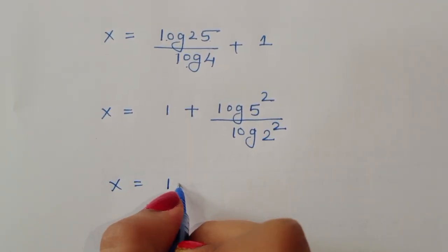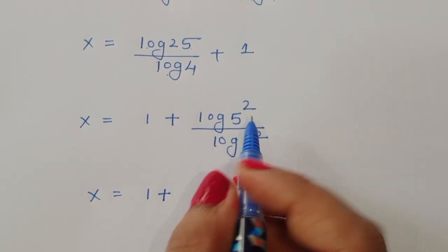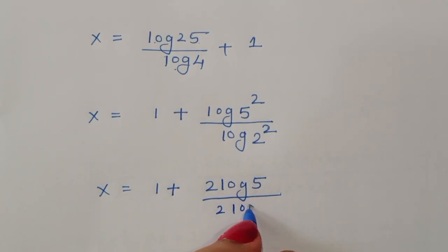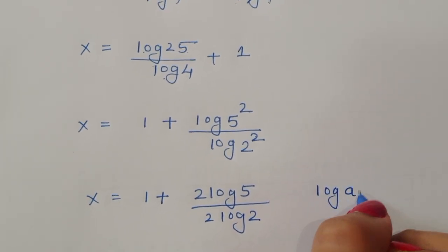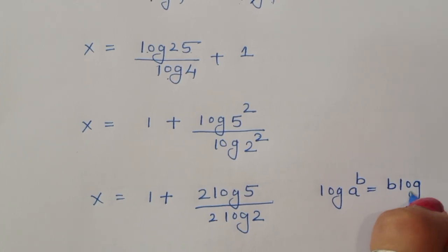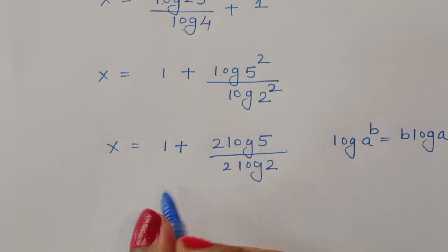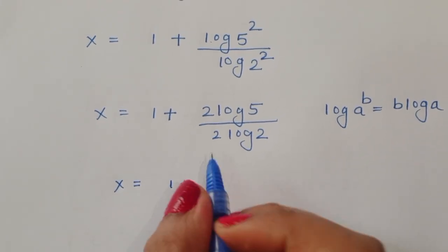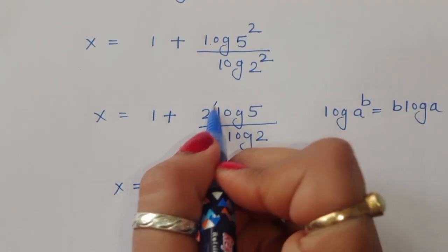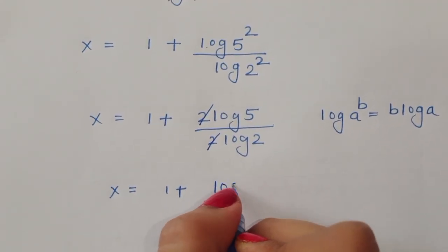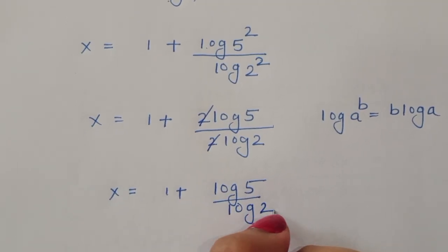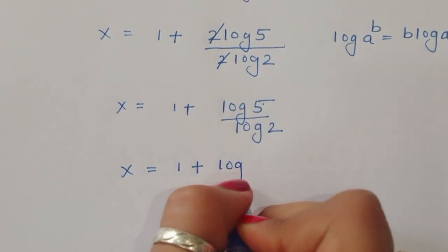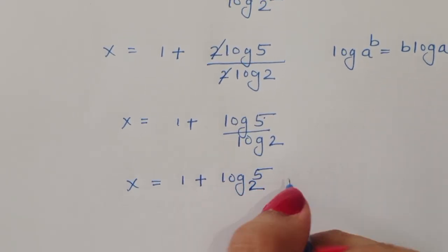So x is equal to 1 plus — now applying the power rule log(a^b) = b·log(a) — we get 2 log of 5 divided by 2 log of 2. The 2s cancel, giving 1 plus log of 5 divided by log of 2. Or we can write this as x is equal to 1 plus log of 5 to the base 2.